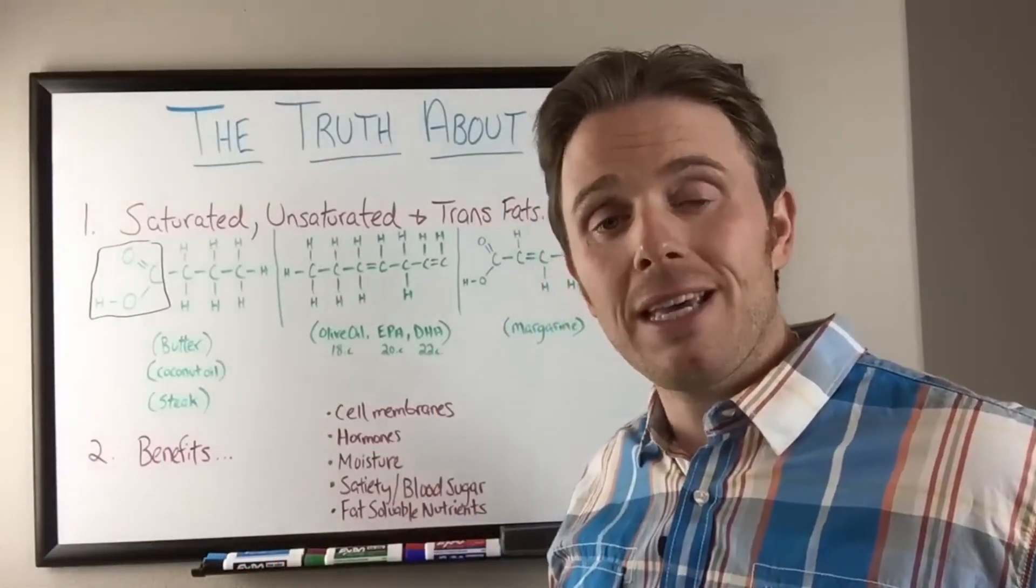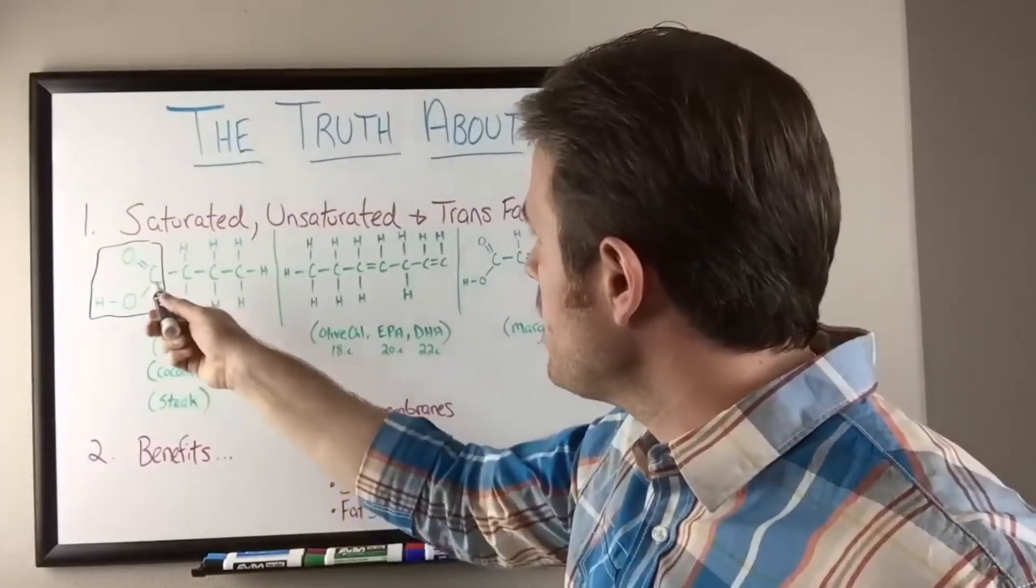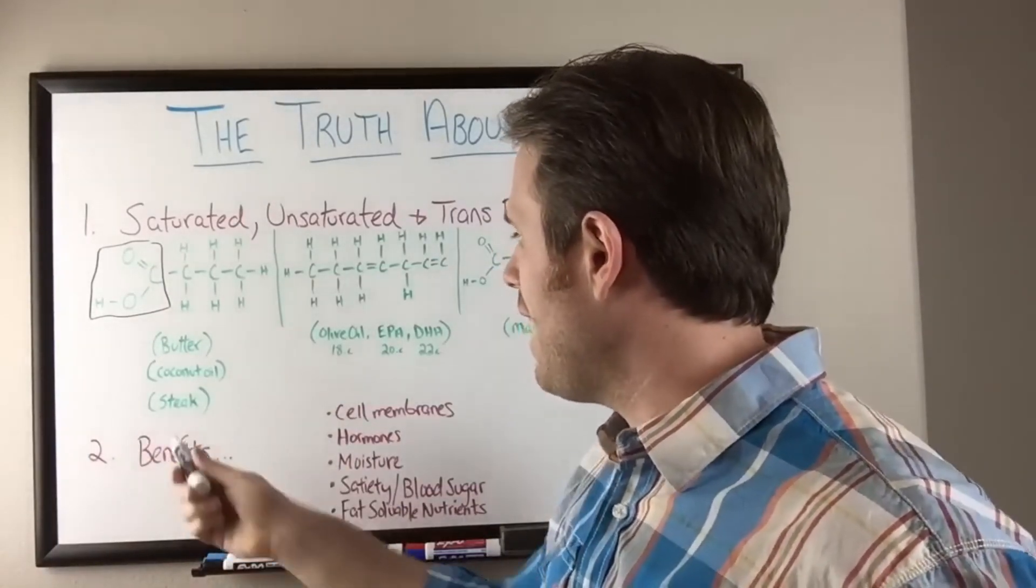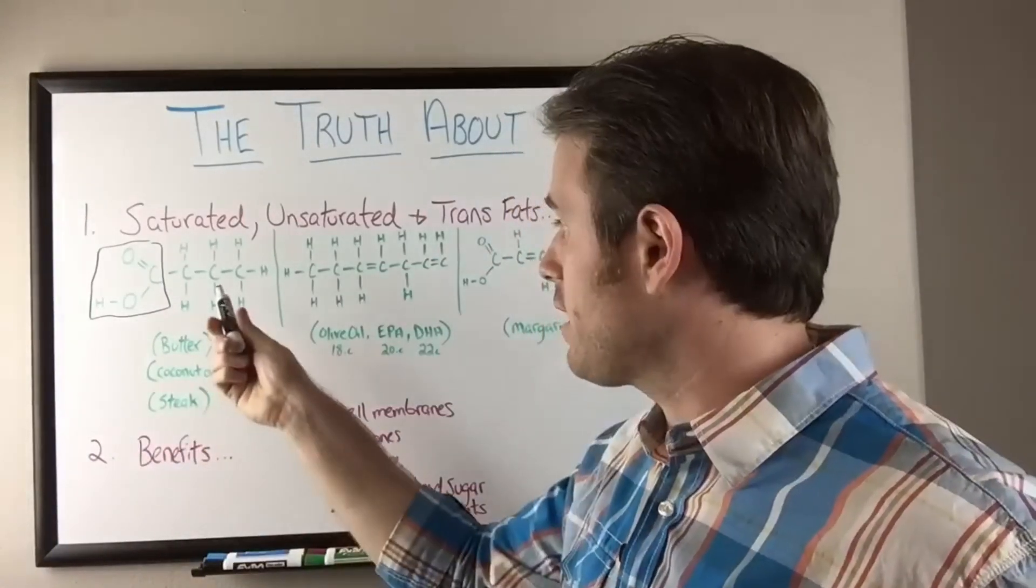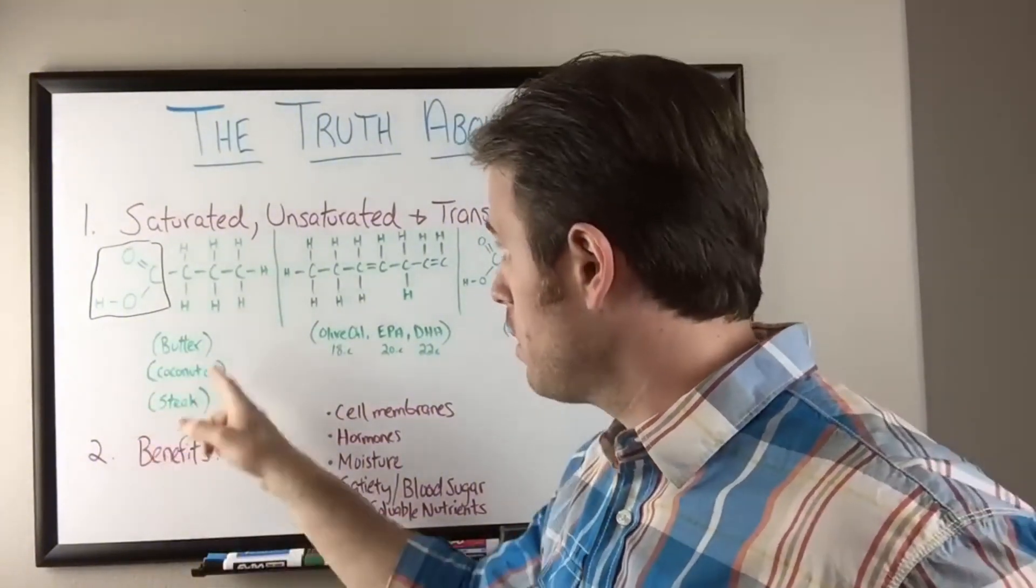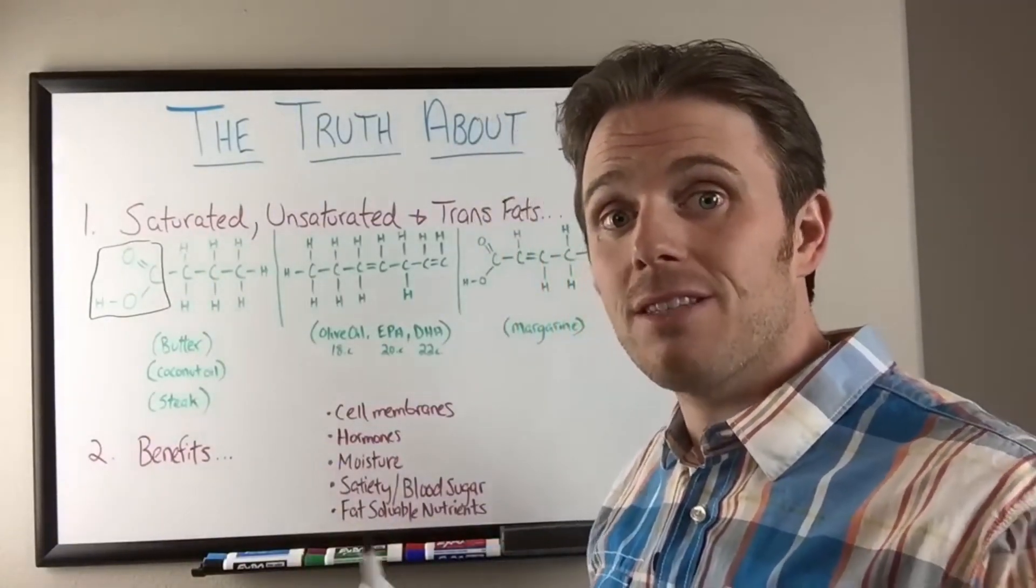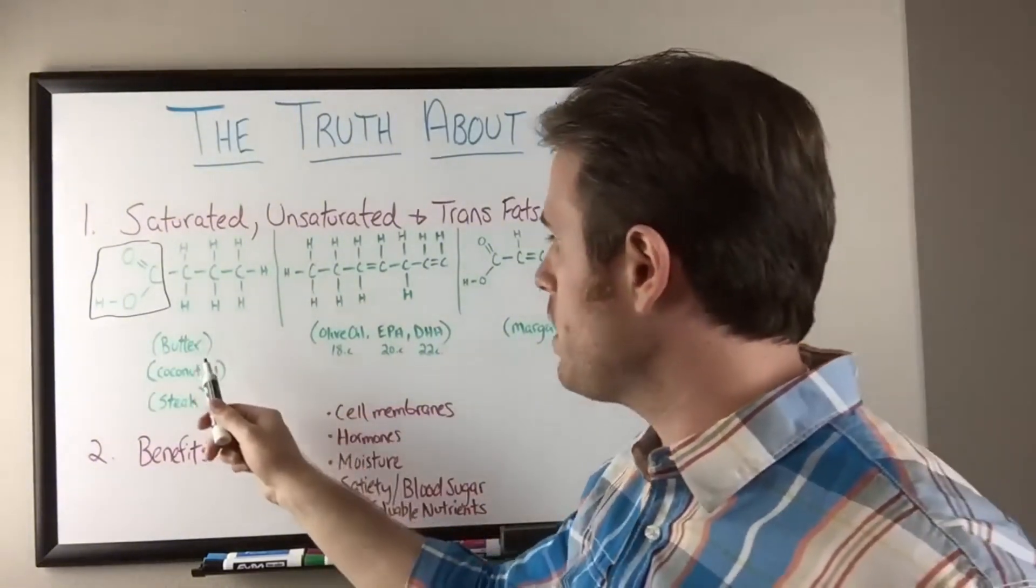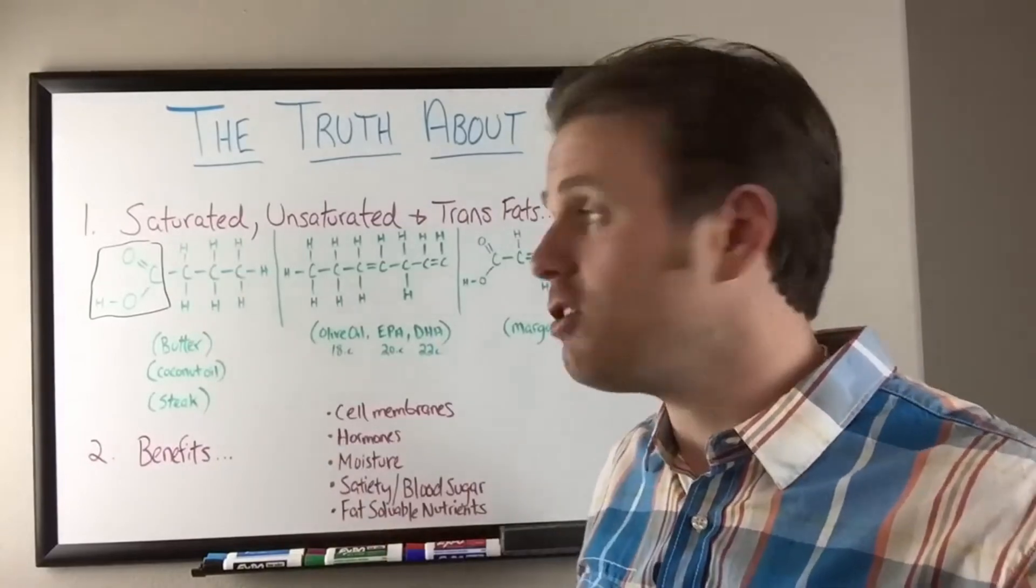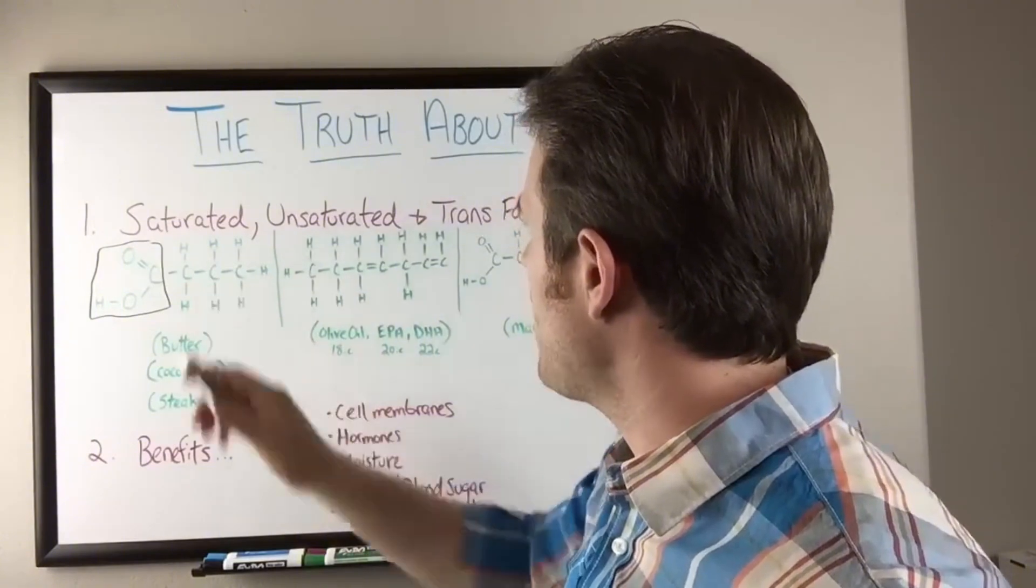So depending on how many carbons we add to that molecule, that depends on what the fat is. If we go up to, let's say 18 carbons, that becomes stearic acid. And that's the same acid that steak is primarily made of. And steak's actually made out of saturated fat, but also half polyunsaturated, or same as essentially olive oil. We'll go into that in a second. So we have butter, we have coconut oil, we have steak, all made depending on how many carbons we attach it. So you can see these are our saturated fats because the carbons here are saturated. They have four bonds attached to them.